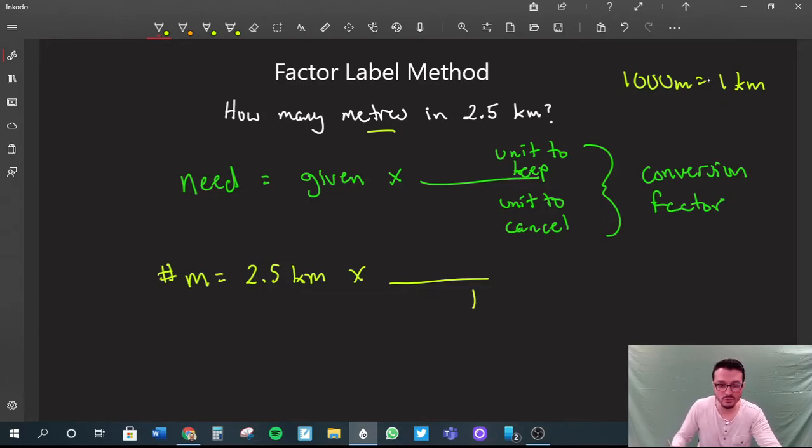The unit we want to cancel is going to go at the bottom, and the unit we want to keep remains on the top. So we can cancel out these units, and we get meters.